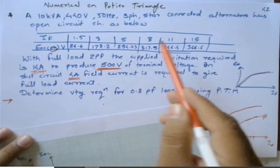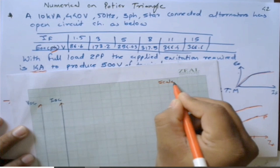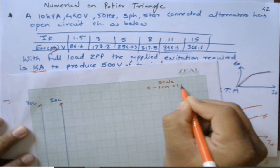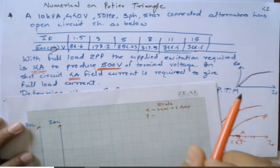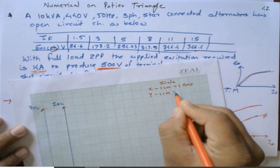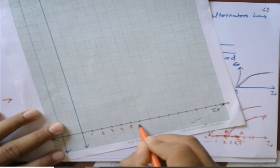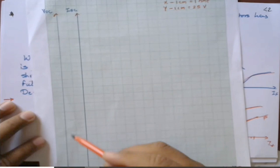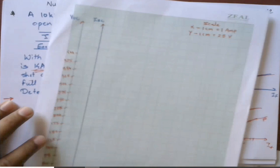We will plot the OCC curve. The field current values start from 1.5 and end at 15. For the x-axis, the scale is 1 centimeter equal to 1 ampere. For the y-axis, the maximum is 400, so the scale is 1 centimeter equal to 25 volt. Accordingly, on x-axis we mark 4, 5, 10, 15, and on y-axis up to 400.